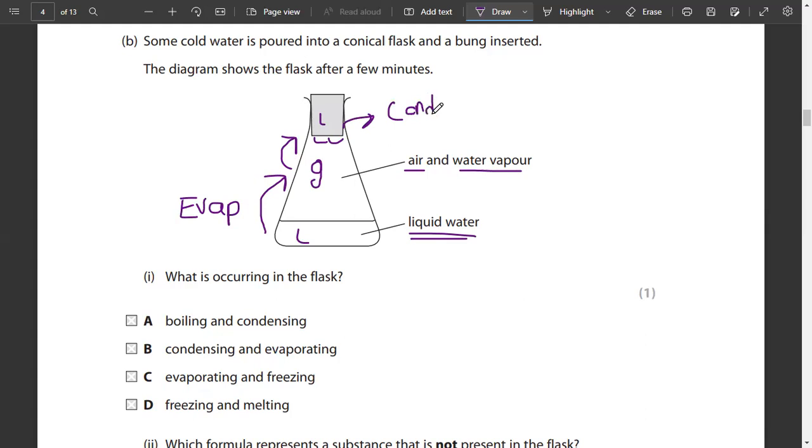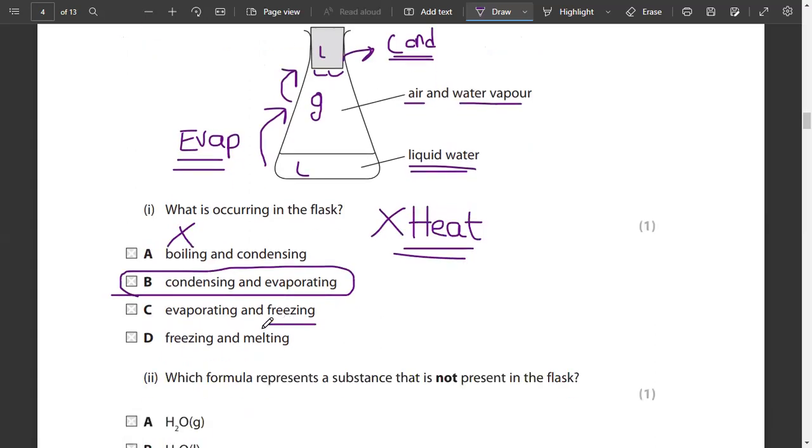So in this flask, evaporation and condensation both are taking place - that would be option B. Boiling is not taking place because you are not providing any heat. When you are not providing any heat, boiling is not taking place. Freezing and melting is wrong. The only correct answer here is option number B.